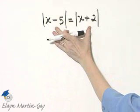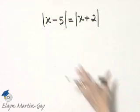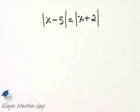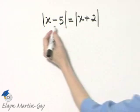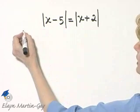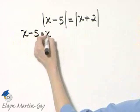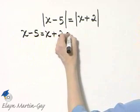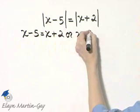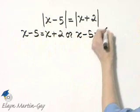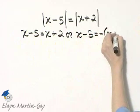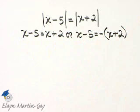If they are opposites of each other, their absolute values will still be equal. So that's how we solve this. For this to be true, either x minus 5 must equal x plus 2, or x minus 5 must equal the opposite of x plus 2. And I have two equations now to solve.